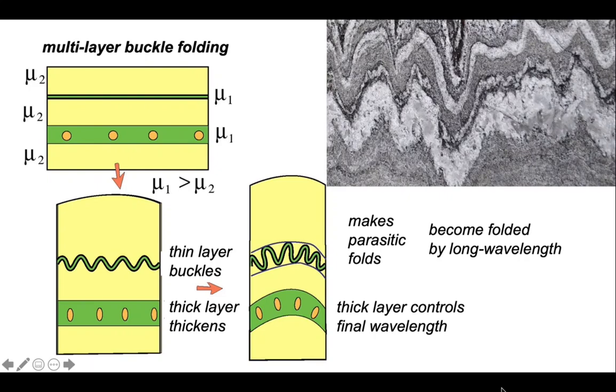Here's an example of quartzofeldspathic rocks with different layer thicknesses. If we pick out the layering, you can see that the thin layer picked out in yellow is deforming on a shorter wavelength in general than the thicker layer, which is picked out in green. The little folds are folded by the longer wavelength structures. So we have another mechanism by which we can form parasitic folds.